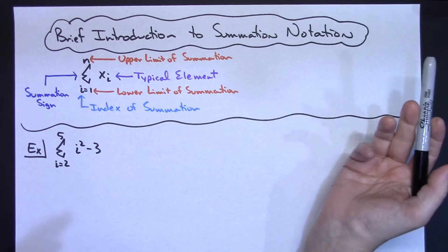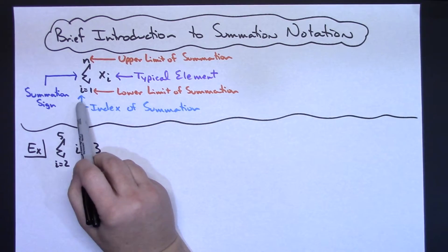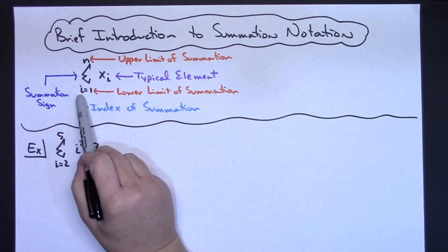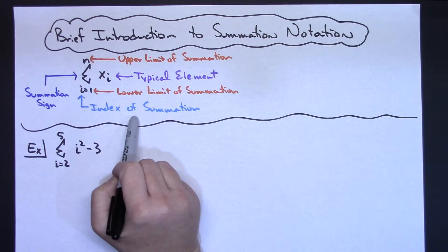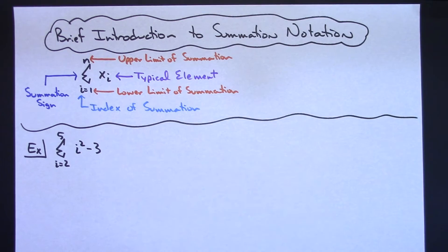Whatever appears right here is your typical element that tells you what's going to be summed over and over and over. And then i generally is what they use as their index of summation, so i is generally the number that varies and changes through that summation.